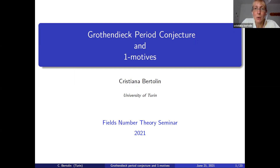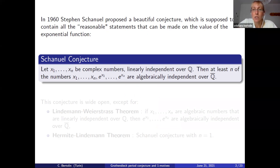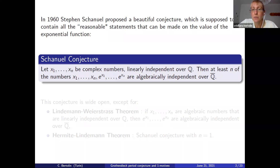I start by recalling the Schanuel conjecture. The Schanuel conjecture states that if we have n complex numbers x₁, …, xₙ which are ℚ-linearly independent, then at least n of the numbers x₁, …, xₙ, eˣ¹, …, eˣⁿ are algebraically independent over ℚ̄.